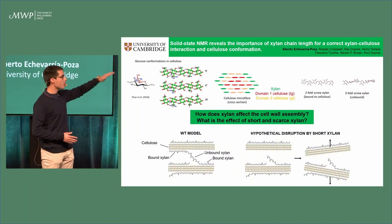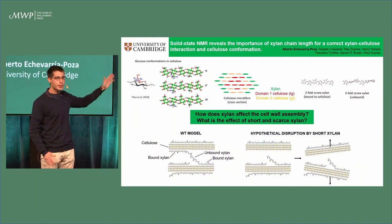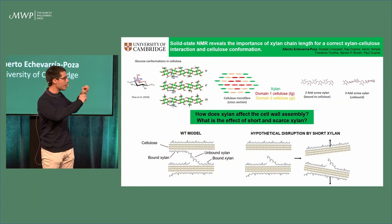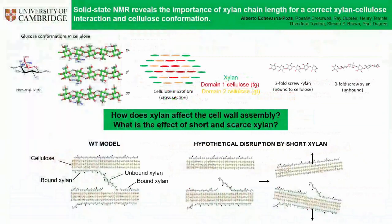Starting with this model on the bottom, you can see that in a wild-type plant xylan is cross-linking two different cellulose microfibrils. But now imagine that that xylan chain is shorter and unable to reach the second cellulose microfibril — this might be falling apart and causing disruption.